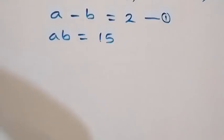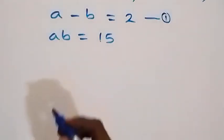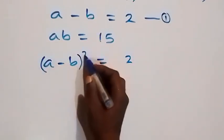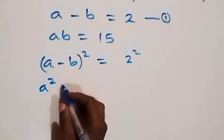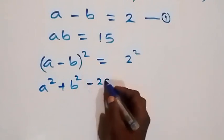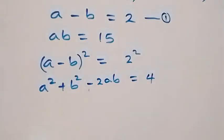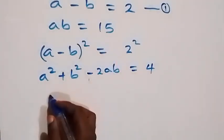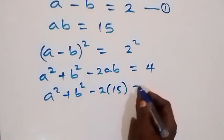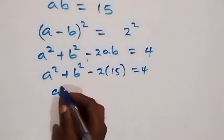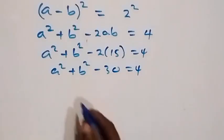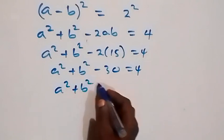From equation 1, A minus B equals 2. Squaring both sides gives A squared plus B squared minus 2AB equals 4. Substituting AB equals 15, we have A squared plus B squared minus 30 equals 4. Taking minus 30 to the other side, A squared plus B squared equals 34.